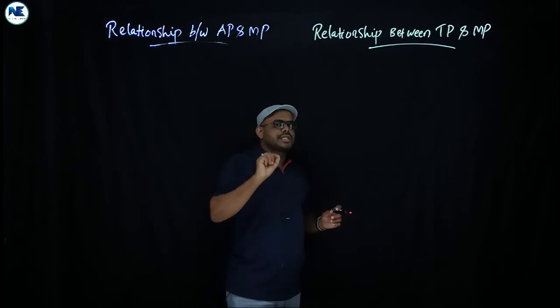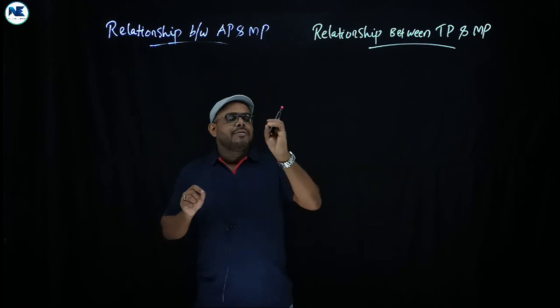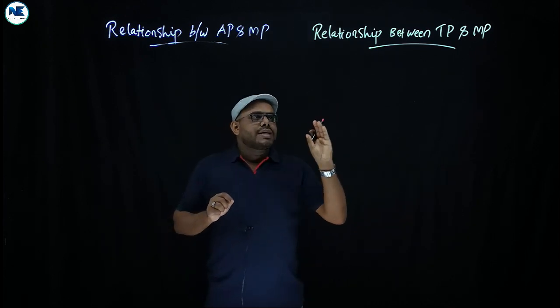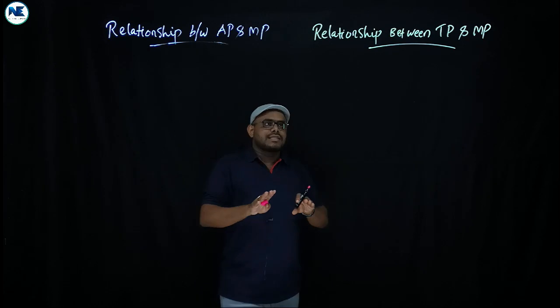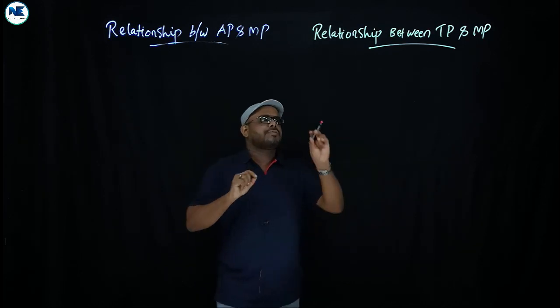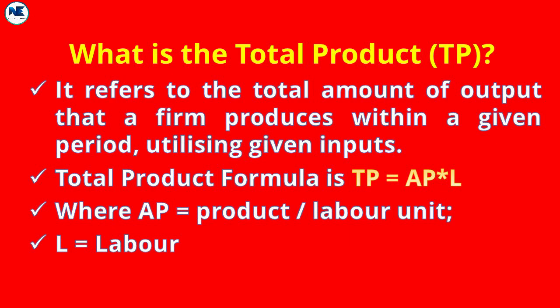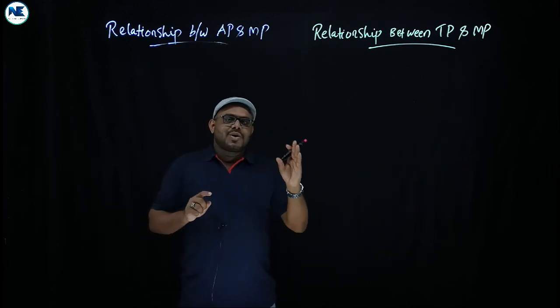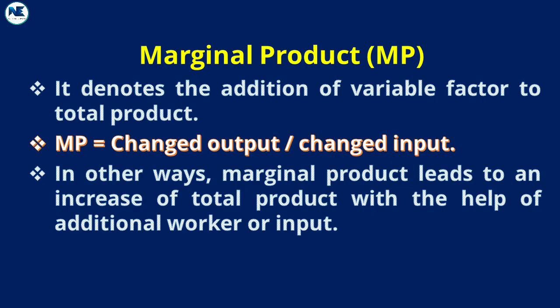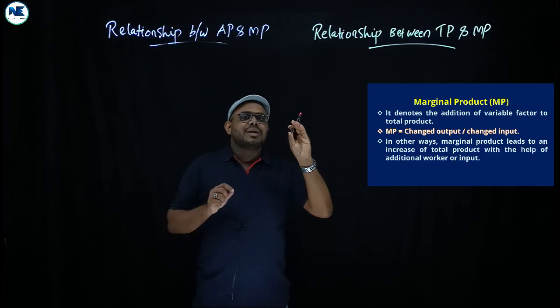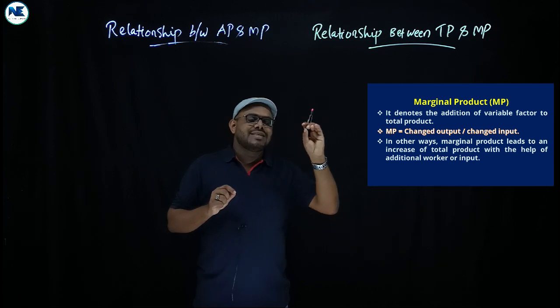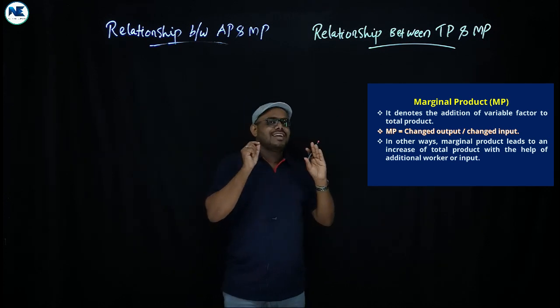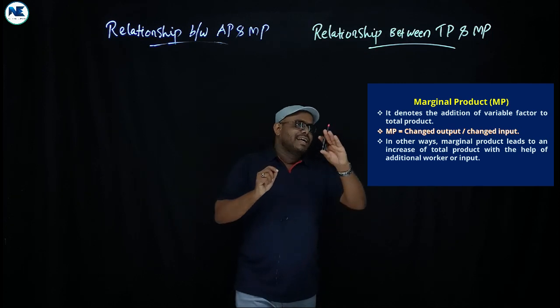The relationship between total product and marginal product is a really very interesting and unique relationship. First, total product is the total output produced by a firm using all the factors of production. Marginal product is the addition to total product when we employ an extra unit of variable input. Marginal product equals change in TP divided by change in variable factor or input.